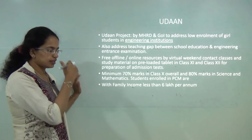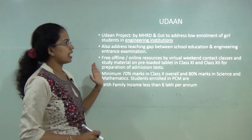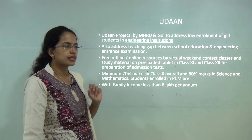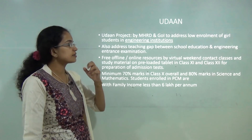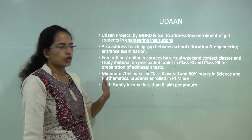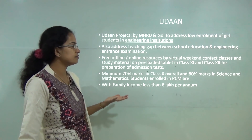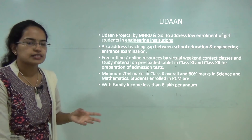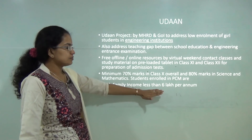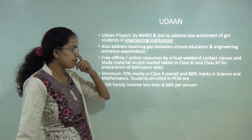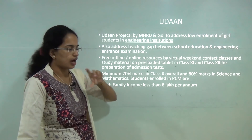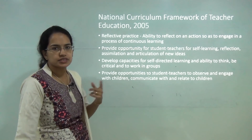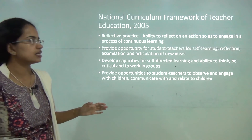UDAAN is a scheme released by MHRD and Government of India aimed at addressing the low enrollment of girls in premier engineering courses. It provides offline and online courses, virtual learning, weekend programs with pre-loaded tablets, and study materials during classes 11 and 12. Eligibility requires family income below 6 lakhs per annum, minimum 70% in class 10, 80% in science and mathematics in class 10, and enrollment in Physics, Chemistry, and Maths. This scheme is specifically for engineering background.